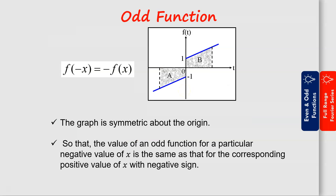For odd functions, the definition is given by: if you have a function where f(-x) equals negative f(x), the function is said to be an odd function.